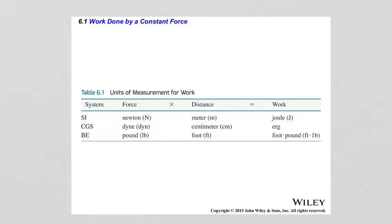Here is a table with the units for force, distance, and work in three measurement systems. In the SI metric system, force is in newtons, distance in meters, and work is measured in joules. In the older centimeter-gram-seconds system, force is measured in dynes, distance in centimeters, and work in ergs. And in the imperial system, we have pounds for force, feet for distance, and work is measured in foot-pounds.